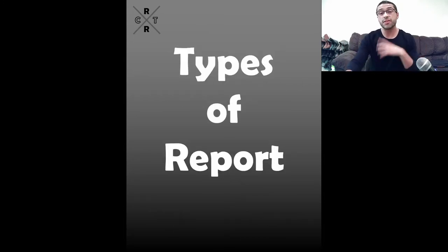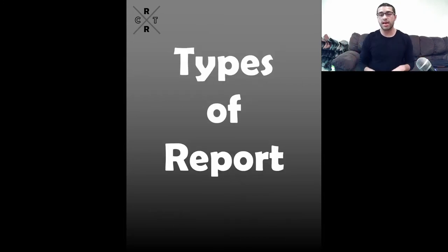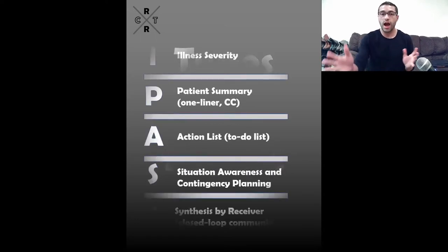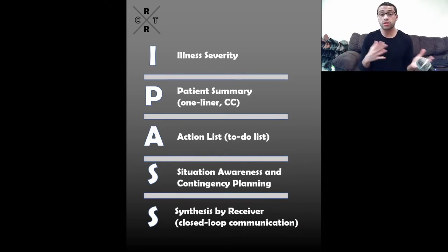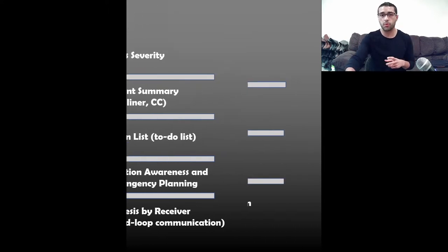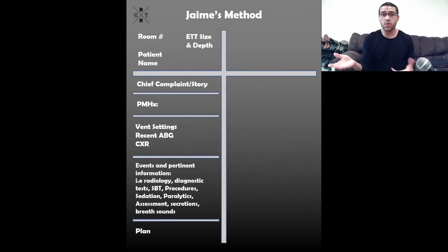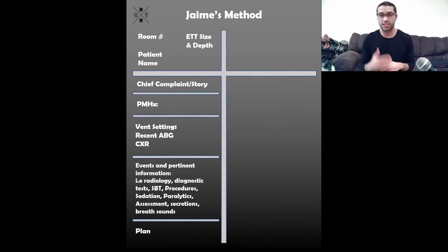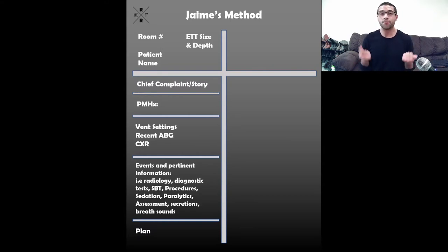When you're giving report, there are a few types. There's I-PASS — illness severity, patient summary, action list, situation awareness, closed-loop communication. That's one standardized way of giving report. Then you have SBAR, which is also a pretty standardized method. And then you have Jaime's method — I'm Jaime, and this is how I used to take notes as a medical scribe in the ER, which carried over into my note-taking for respiratory therapy patients.